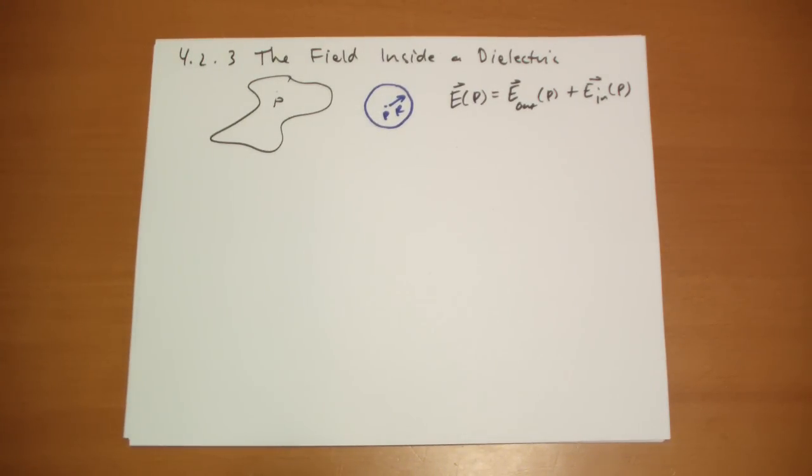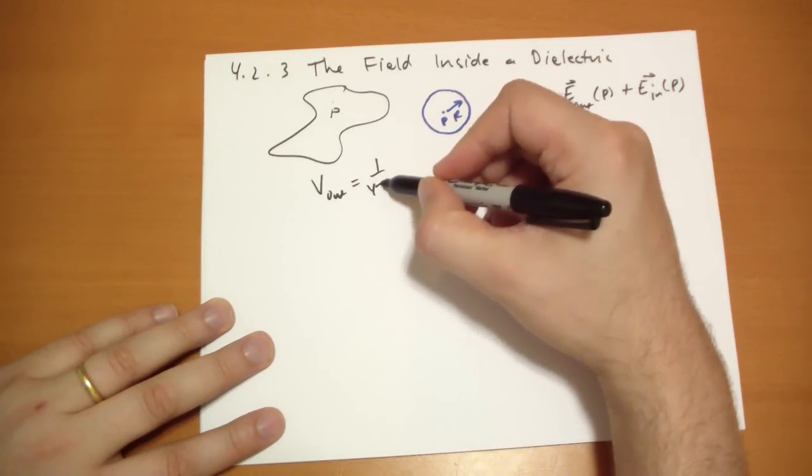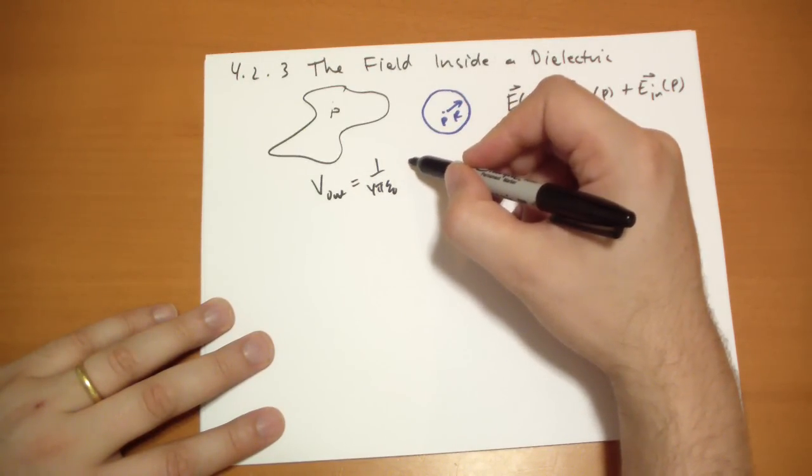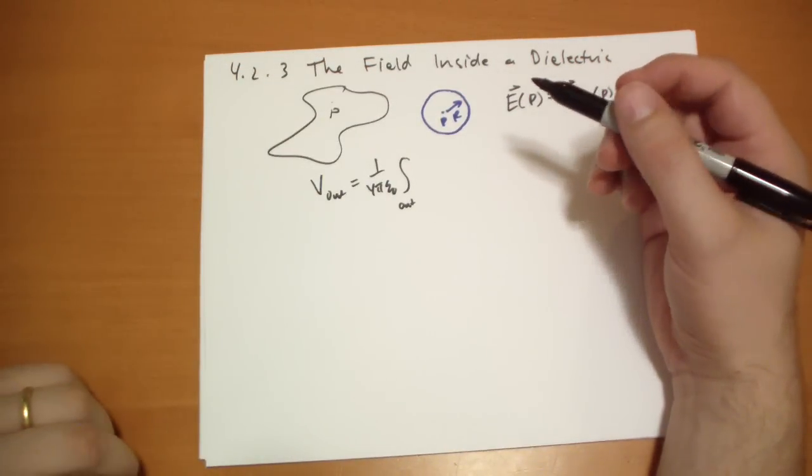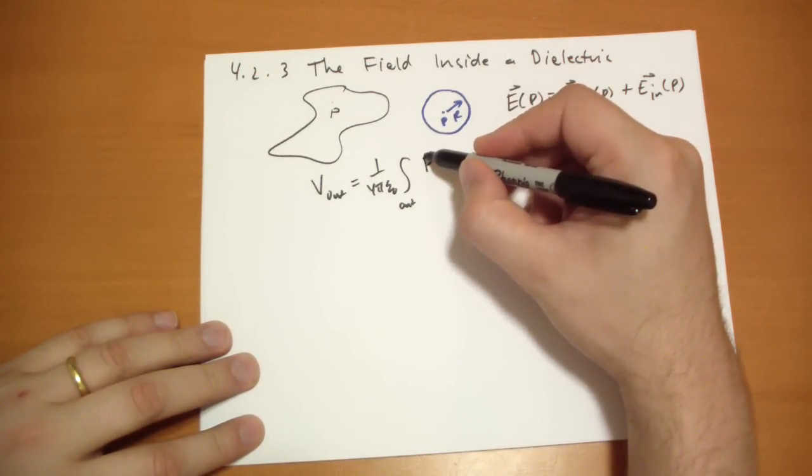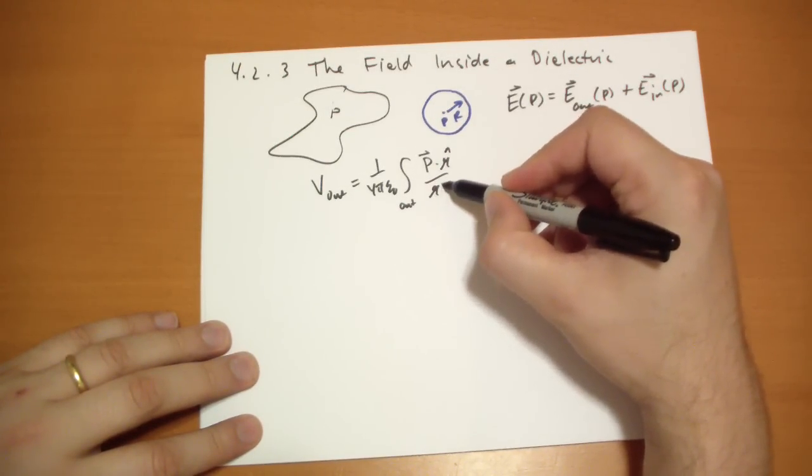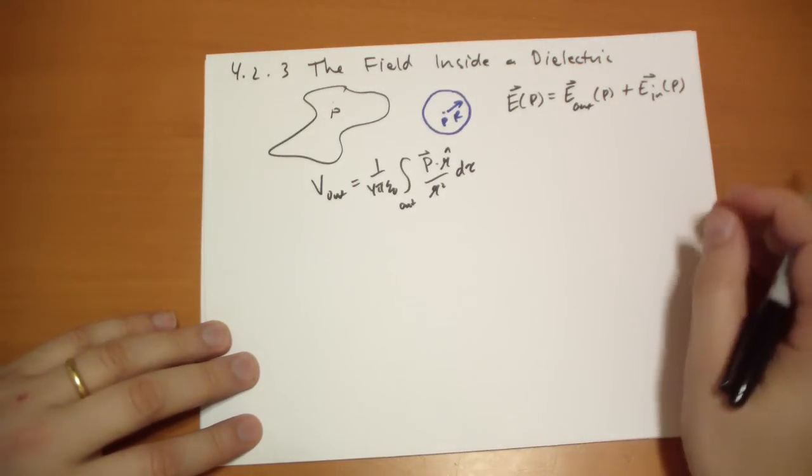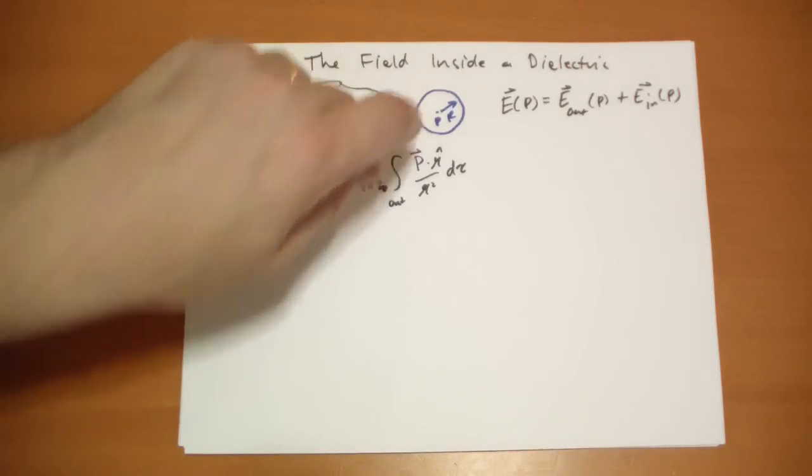So let's calculate the electric field due to the outside. Well, the potential due to all the stuff going on the outside can be written out as 1 over 4 pi epsilon naught times the integral of all the stuff on the outside. This including this point or this sphere on the inside of the polarization of that material dot r hat over r squared d tau. So that's the outside. And this integral includes everything but this sphere. So that only gives us a part of the electric field.